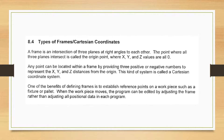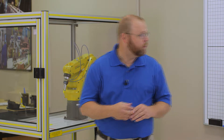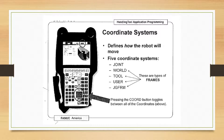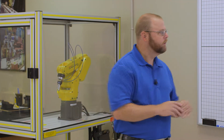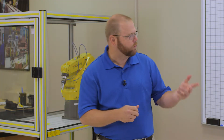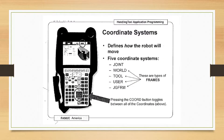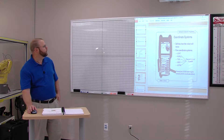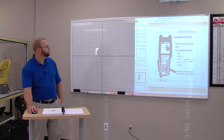One of the benefits of defining a frame is to establish reference points on a work piece, such as a pallet, so that when the work piece moves, we can edit the program simply by adjusting the frame rather than reteaching all those points. Our five coordinate systems again are joint, world, tool, user, and jog frames. Four of these are frames; the joint is a non-Cartesian system. Pressing the coordinate button toggles between all of the coordinates, and we'll be showing you that on the teach pendant as you get ready to jog the robot.